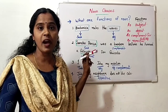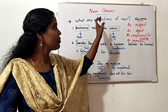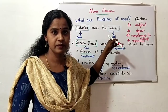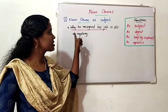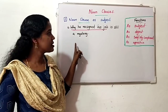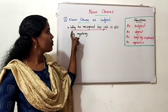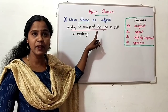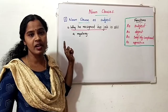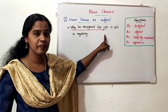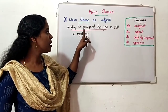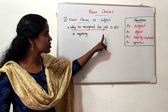Likewise, these are the functions of noun clause too. A noun clause acts as a noun in a sentence. Let's see noun clause as subject. Example: 'Why he resigned his job is still a mystery.' The clause 'why he resigned his job' has 'he' as subject and 'resigned' as verb.